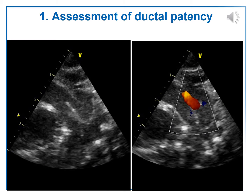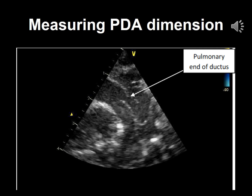Here, the 2D image and a color flow Doppler image are shown side by side, demonstrating the pulmonary end of the ductus arteriosus and a part of the descending aorta, showing the entire length of the PDA. It can be compared with the left pulmonary artery, which is on its right. This slide shows a 2D image of the patent ductus arteriosus and the left pulmonary artery side by side.